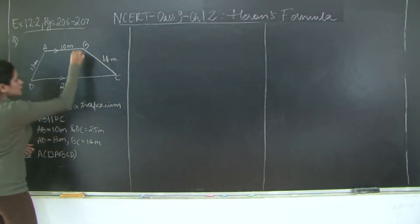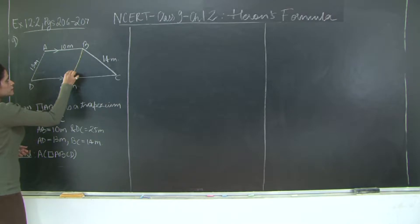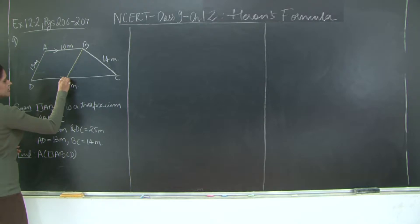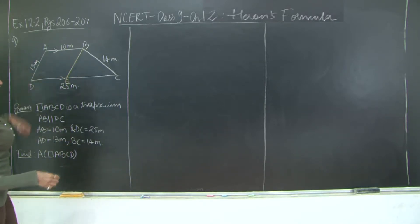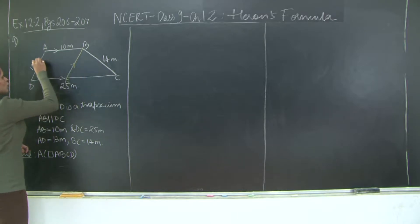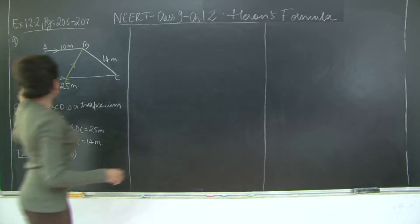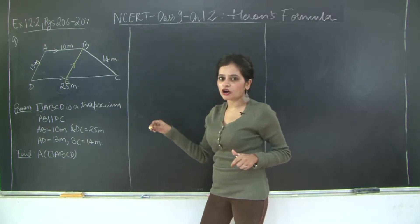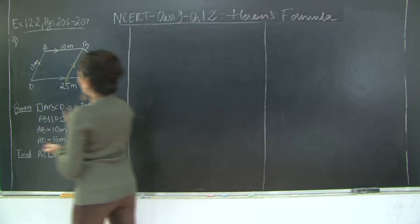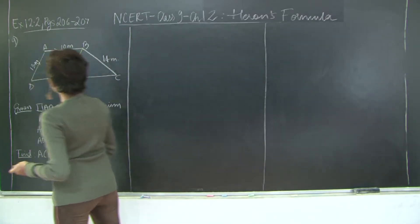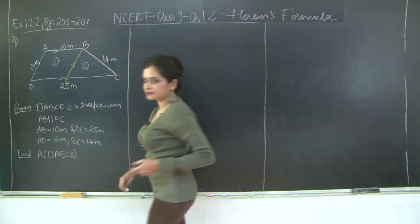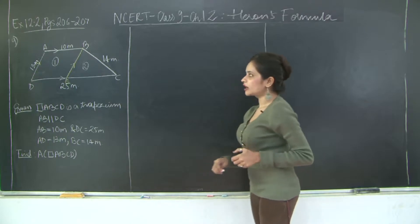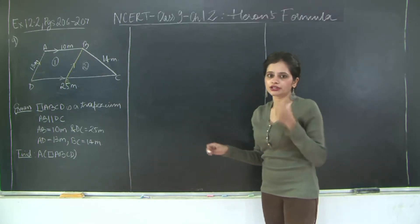I will do it with a yellow chalk. So if I take this point E such that BE is parallel to AD, I get ABED to be a parallelogram. Therefore my trapezium is now made up of two parts: one is parallelogram ABED and one is triangle BEC.